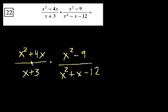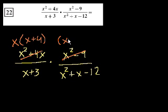So here we could just factor out an x. So this becomes x times x plus 4. Right? This is a squared minus b squared, so this becomes x plus 3 times x minus 3.